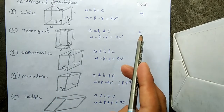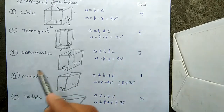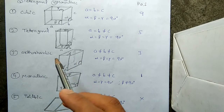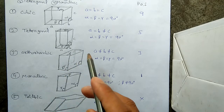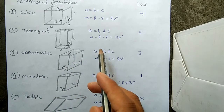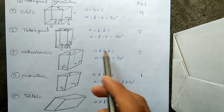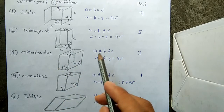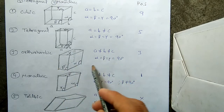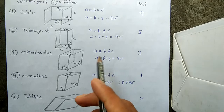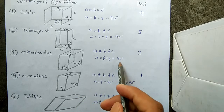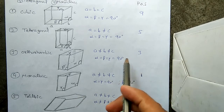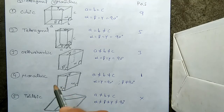The third one is Orthorhombic. In Orthorhombic, all three sides are not at all equal — all three sides are unequal. However, all the angles are equal to 90 degrees. This system has three planes of symmetry.